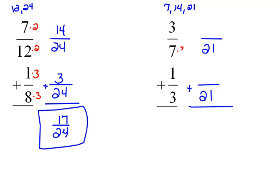So 7 times 3 is 21. So we do the same thing to the top. 3 times 3 would be 9. For the second fraction, 3 times 7 would be 21. So 1 times 7 would be 7. And now we can add.